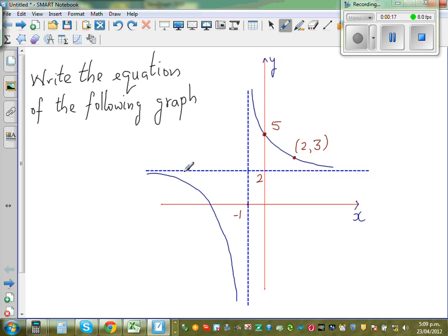And you've got two asymptotes here. So this line is passing through 2 on the y-axis. So you can say this line is y is equal to 2.